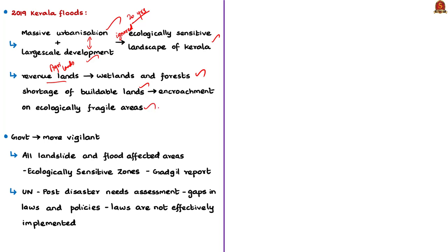Substantial portions of the revenue lands in Kerala are wetlands and forests, so there is a shortage of buildable land, creating huge pressure on ecologically fragile areas which are being converted for government infrastructure and private enterprises. The author tells that the Kerala floods may be natural, but their disastrous effects could have been mitigated if the government had been more vigilant. All the areas where landslides and floods happened are in the ecologically sensitive zones as per the Madhav Gadgil report. The Gadgil Commission was an environmental research commission formed to study the ecology of the Western Ghats, and it submitted its report to the central government in 2011.